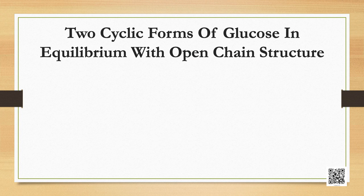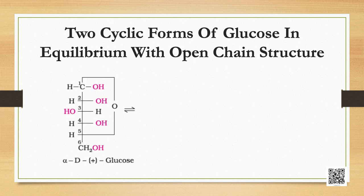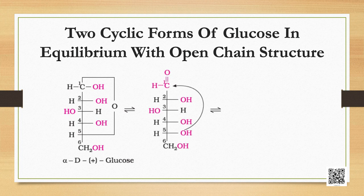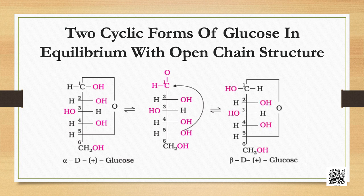But some reactions and facts could not be explained by this structure. First, despite having the aldehyde group, glucose does not give Schiff's test and does not form the hydrogen sulphite addition product with sodium bisulphite. Second, the pentaacetate of glucose does not react with hydroxylamine, indicating the absence of a free CHO group. Third, glucose is found to exist in two different crystalline forms, named alpha and beta; this behavior could not be explained by the open chain structure.